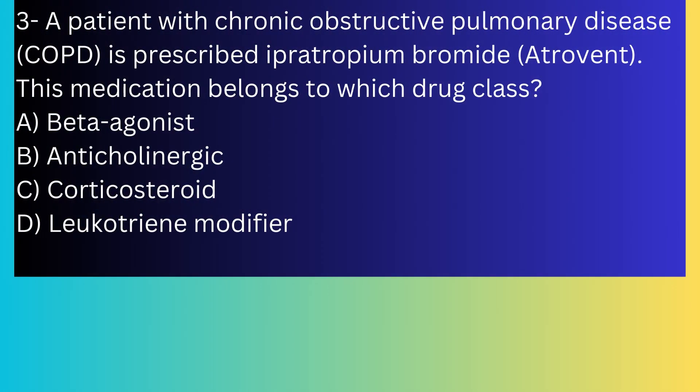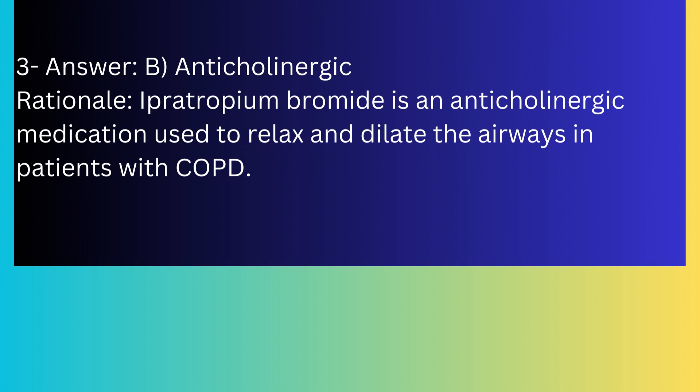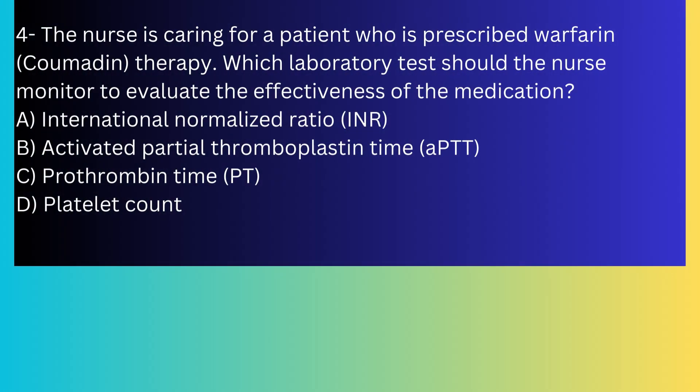Question number three: A patient with chronic obstructive pulmonary disease (COPD) is prescribed ipratropium bromide (Atrovent). This medication belongs to which drug class? A) Beta-agonist, B) Anticholinergic, C) Corticosteroid, D) Leukotriene modifier. The answer is B, anticholinergic. Ipratropium bromide is an anticholinergic medication used to relax and dilate the airway in patients with COPD.